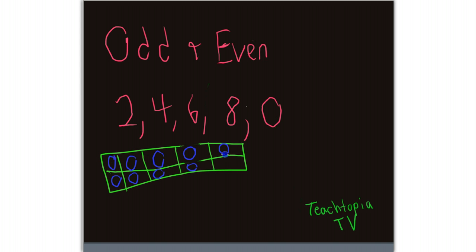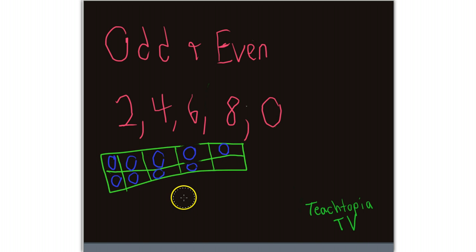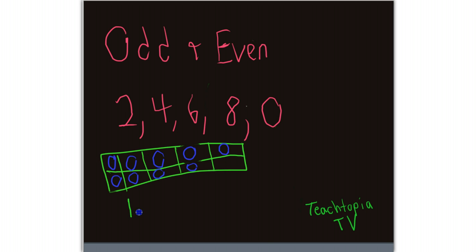What if I did this? 9. Does 9 have a matching pair? No. So therefore it is an odd number. Our odd numbers are 1, 3, 5, 7, and 9.